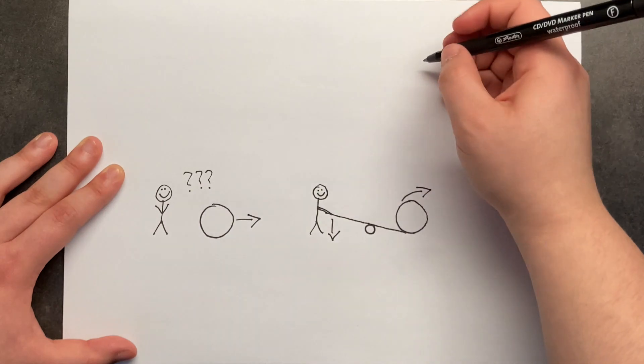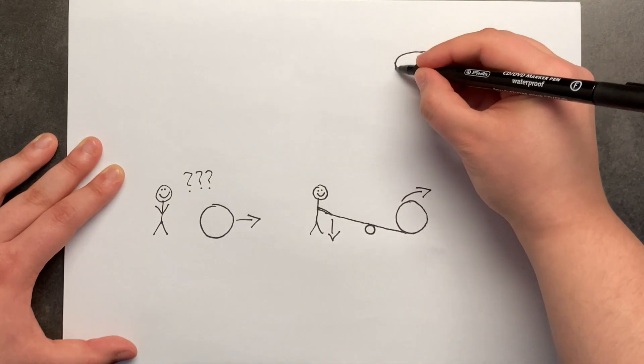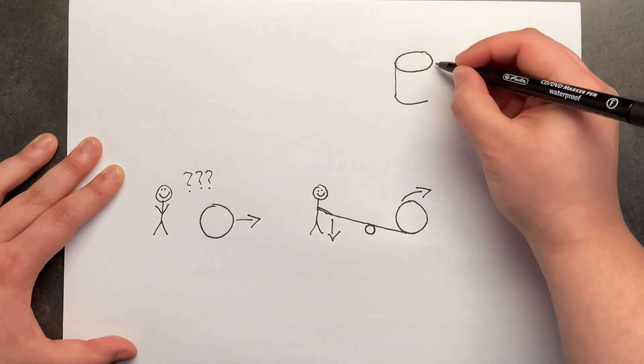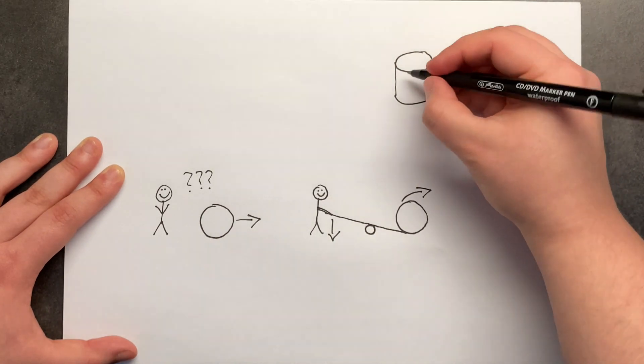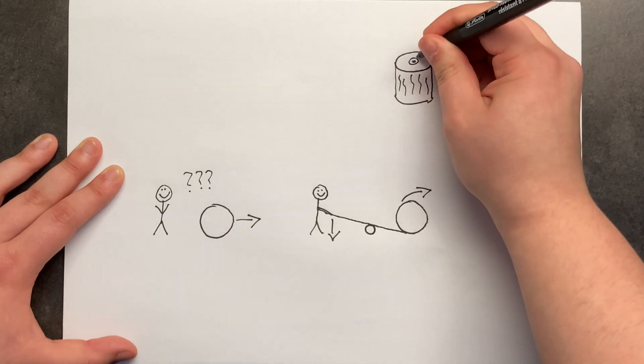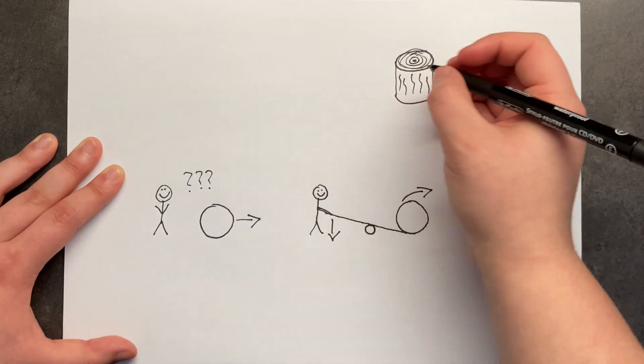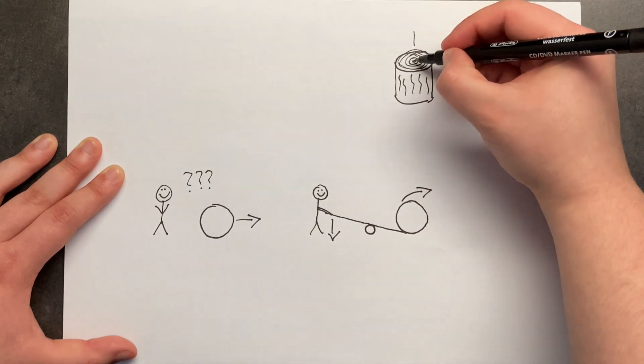There are a couple of other simple machines that are good for you to know about. One of them is a wedge. A wedge can be really useful when you're trying to cut something into smaller bits. So here we have a log, a really sturdy log and we would want to split it in half like this.